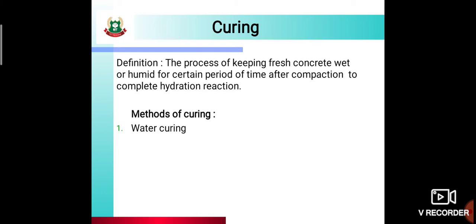Ab hum dekhte hain curing ki kaun-kaun si methods hoti hain. First is water curing — is method mein curing water ke means se provide ki jaati hai. Second is membrane curing — isme hum water use nahi karte, ek membrane sheet concrete ke upar place kar dete hain, jisse evaporation rokta hai aur concrete ka available water hi hydration process complete karta hai. Membrane curing wahan use karte hain jahan acute shortage of water hoti hai.